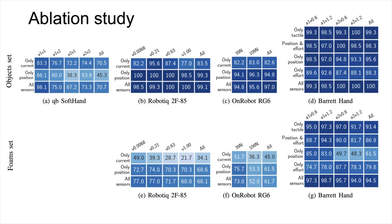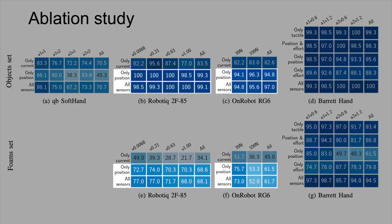For the parallel jaw grippers, the position channel alone delivers strong performance, suggesting that sometimes a single sensory channel is sufficient for discrimination.